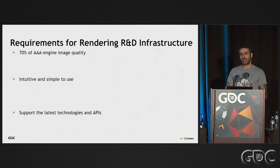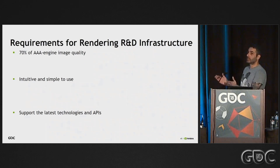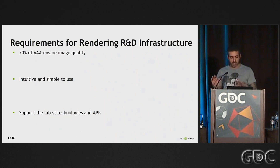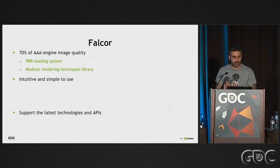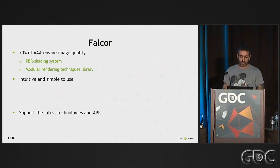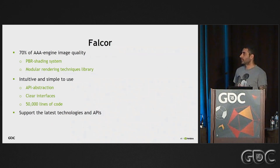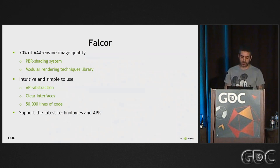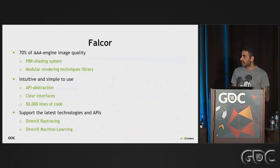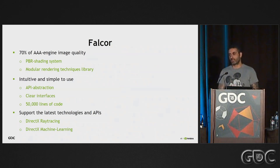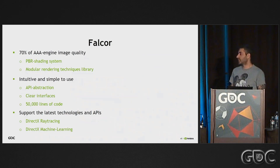We also always want to support the latest technologies and APIs. If someone asks why we don't work in UE4 — it's open source — but we don't want to wait for other people to add DirectX support. We want to always be on the cutting edge. We have 70% of AAA engine image quality, a modern physically based shading system, a large modular rendering techniques library, and an API abstraction layer with clear interfaces — only 50,000 lines of code compared to millions in a game engine. We're releasing DirectX ray tracing support in early April, and DXML is coming in early May.